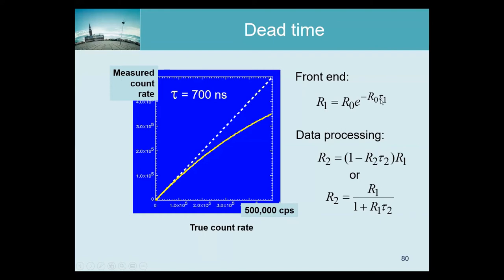So τ₁ is the small time during which we don't want to see anything else. If r₀ is low then the exponent is almost zero and r₁ is almost equal to r₀, which is the well-behaved regime. As soon as r₀ starts to become large compared to the integration time of the system, we start having this problem. Typically τ₁ equals roughly twice the acceptance window, because we don't want a coincidence just before the photon comes in or immediately after it.